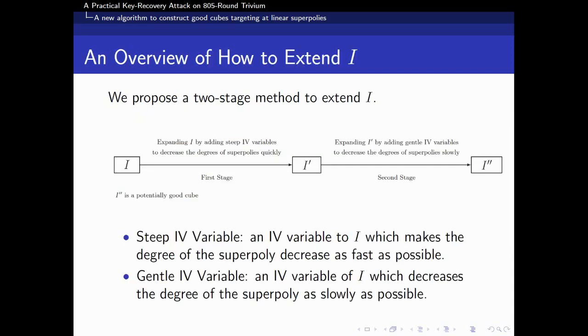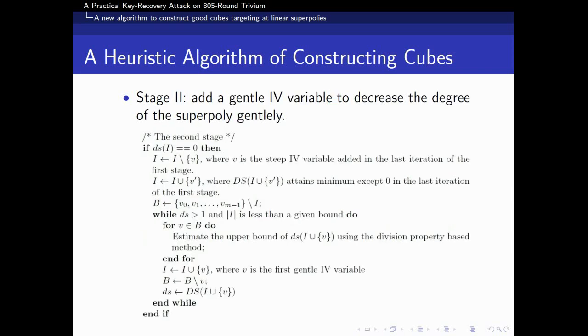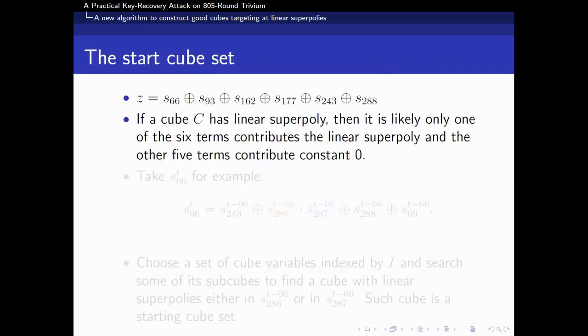We shall first introduce how to solve the second problem. First, we propose a two-stage method to extend I. The figure shows an overview of our method. More specifically, steep IV variables and gentle IV variables are picked in the two different stages. In stage 1, every time, add a steep IV variable to decrease the degree of superpolys as fast as possible. In stage 2, to make the degree of superpolys close to 1, we pick up gentle IV variables in each iteration.